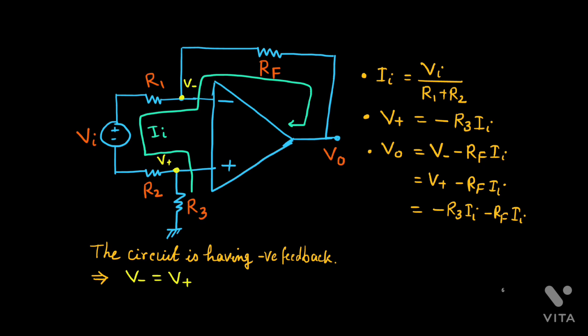Then we can combine this ii together. So minus (R3 + Rf) times ii. Now, we can replace the value of ii by Vi upon R1 plus R2. Then you will get this form, desired form, minus (R3 + Rf) upon (R1 + R2) times Vi.